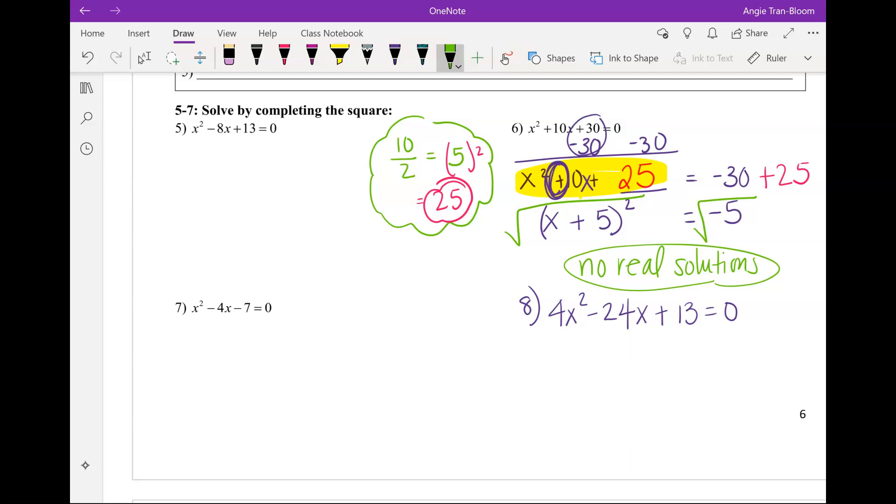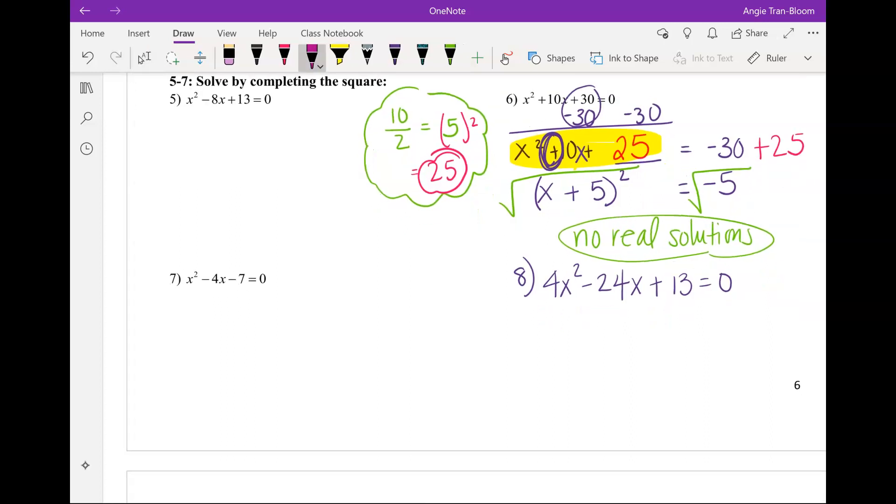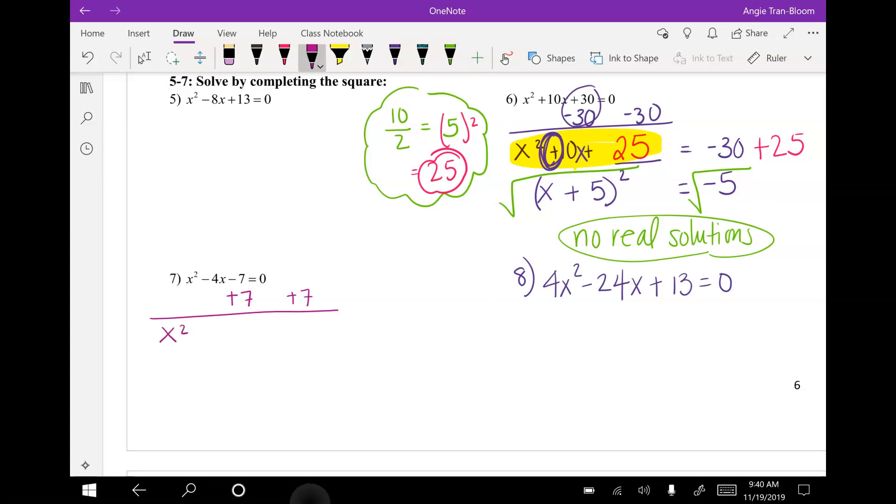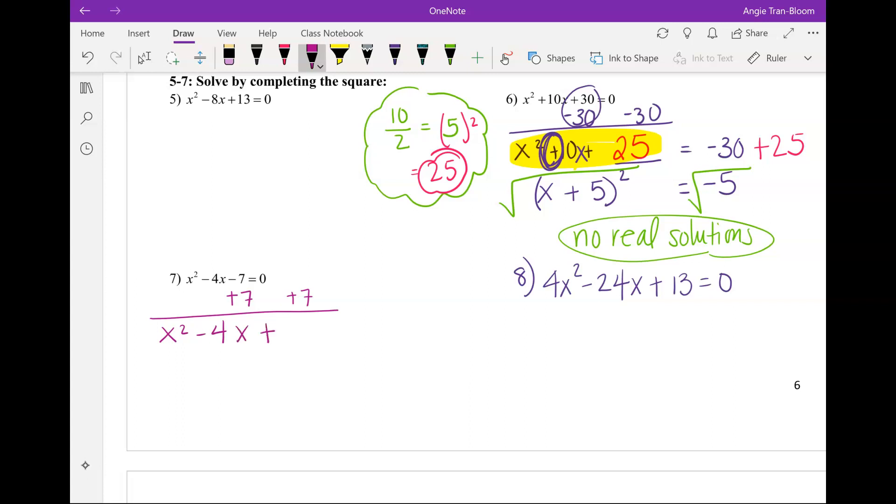All right, Trevor. On example 7, what do you want to do first, Trevor? Set the negative, add a positive 11 to make a positive 4 and a positive 11 on the other side. You mean move 7 to both sides? Sure. Do you guys agree with Trevor? Yeah. So, we got X squared minus 4X plus a blank space equal to 7. I think he was a little bit ahead of us.